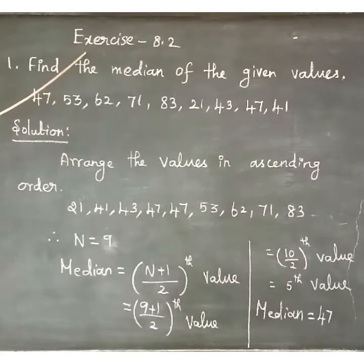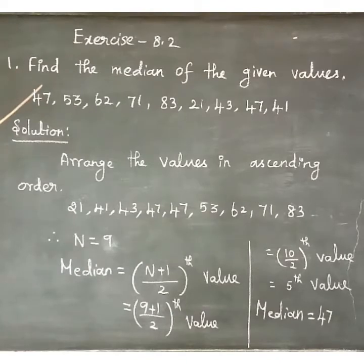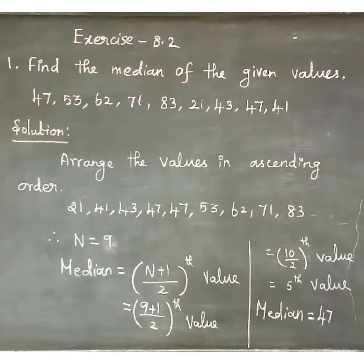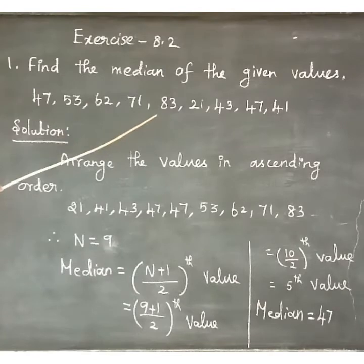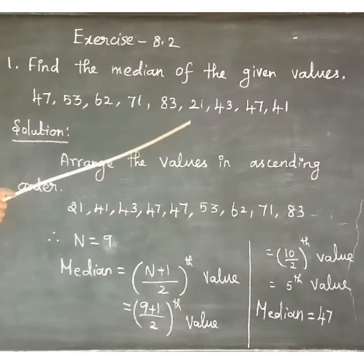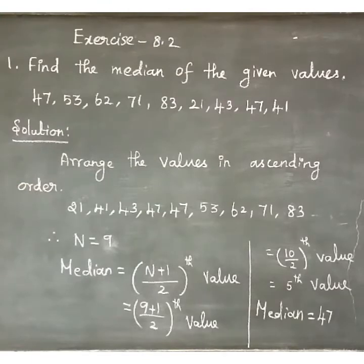Exercise 8.2, first sum. Find the median of the given values: 47, 53, 62, 71, 83, 21, 43, 47, and 41.